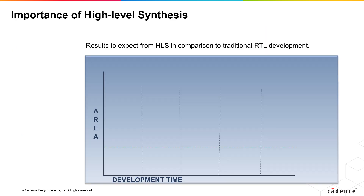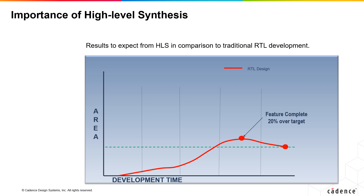Let's look at the expectations of what high-level synthesis does when starting a project. Developing a design feature by feature is common until the feature is complete. At this point, often, there might be a target mismatch of area and power, and then proceeding with optimization to fix the area and power numbers as per requirement, which takes a considerable amount of time.